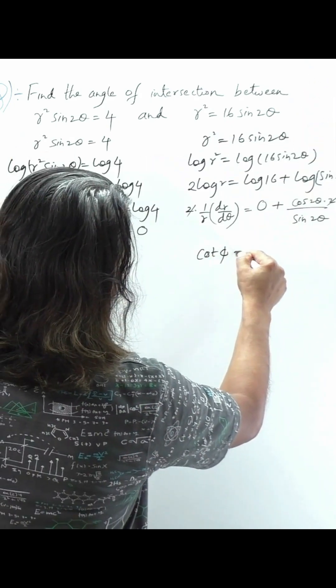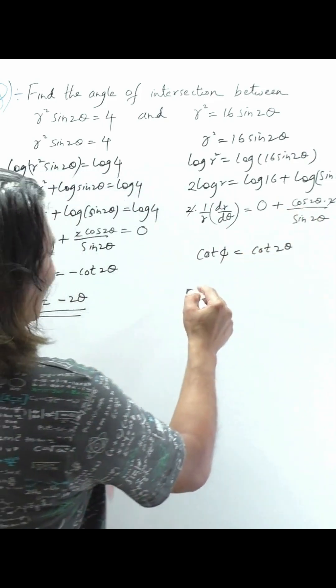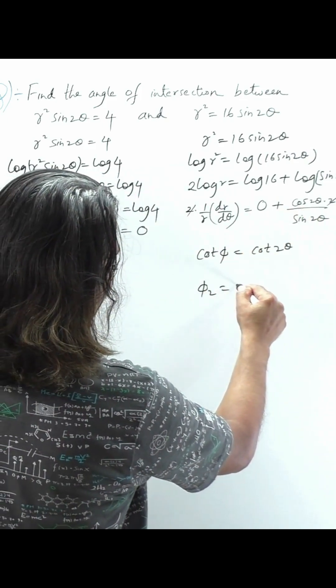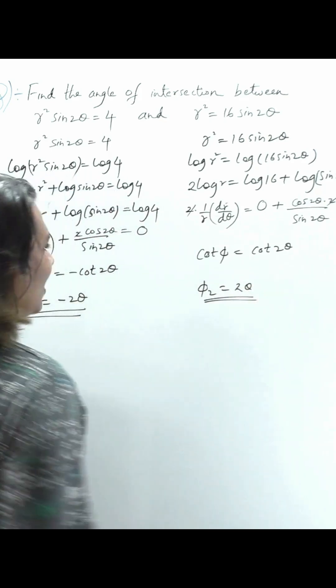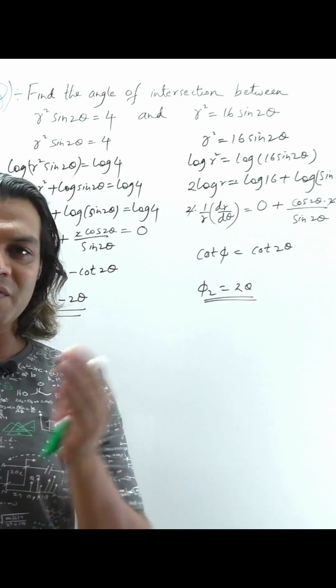Cot φ is equal to cot 2θ, so I will take this angle as φ₂ equals simply 2θ. Now I got both angles, so the general formula to find the angle of intersection...